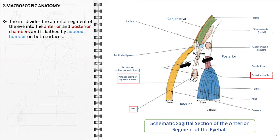Regarding the macroscopic anatomy of the iris, it serves as a dividing structure within the anterior segment of the eye, demarcating the anterior and posterior chambers. The aqueous humor circulates and bathes both the anterior and posterior surfaces of the iris.